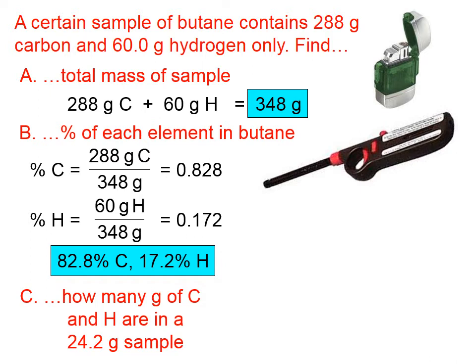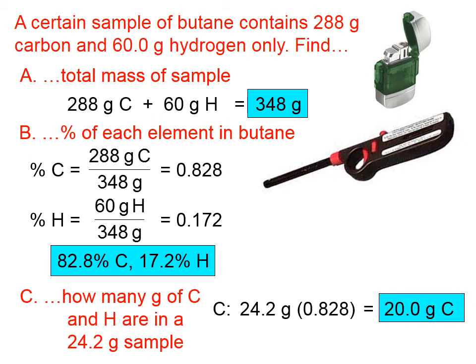Now let's find how many grams of carbon and hydrogen are in a 24.2 gram sample of butane. The key here is that the percentages of the elements are the same in any sample of butane — big sample or small sample, it's always 82.8% carbon and 17.2% hydrogen by mass. To find grams of carbon, we take 24.2 multiplied by 0.828, which gives us 20.0 grams of carbon.